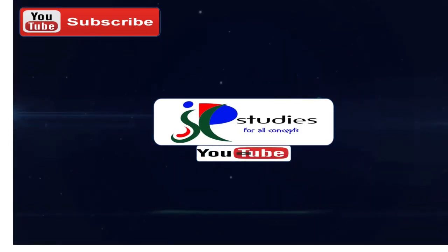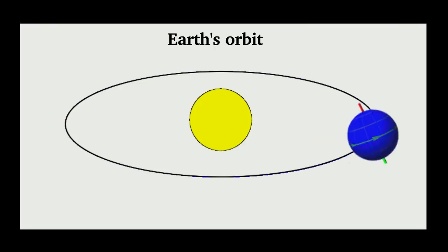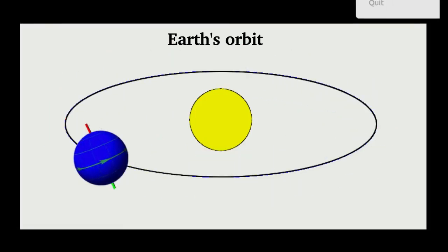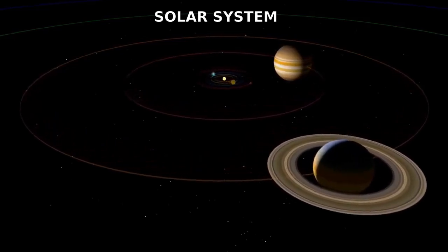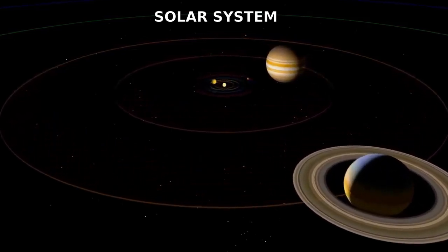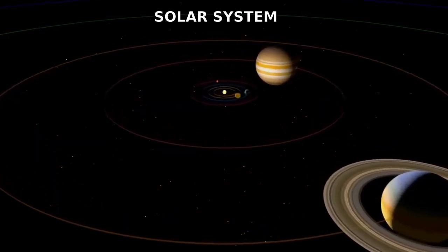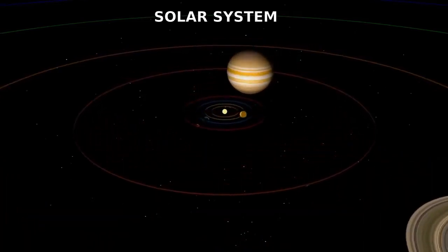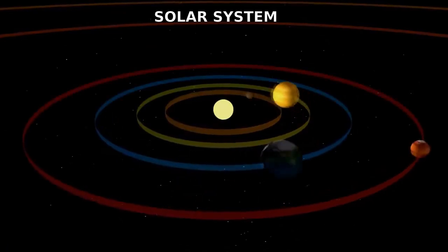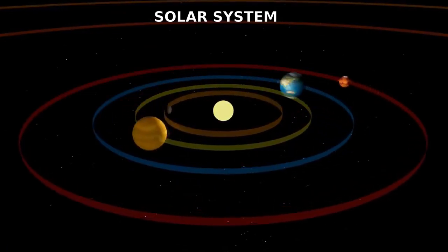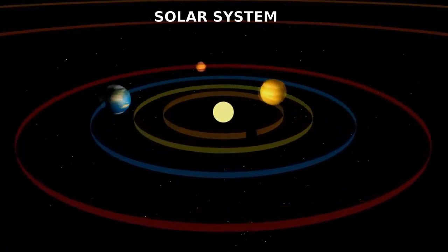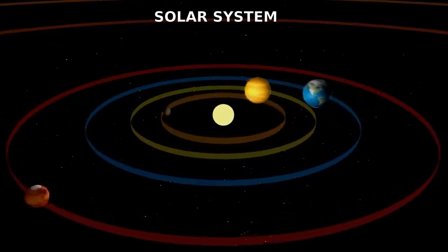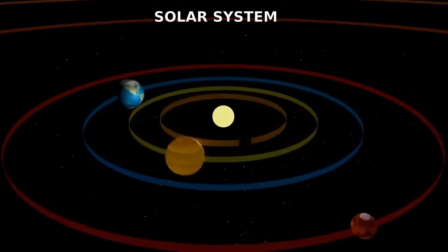Hi Viewers, welcome to JP Studies. Similar to all other planets in our solar system, Earth rotates on its own axis and goes around the Sun in a definite orbit. The orbit is the path of the Earth around the Sun. This orbit is on a uniform plane which is called the plane of the orbit.